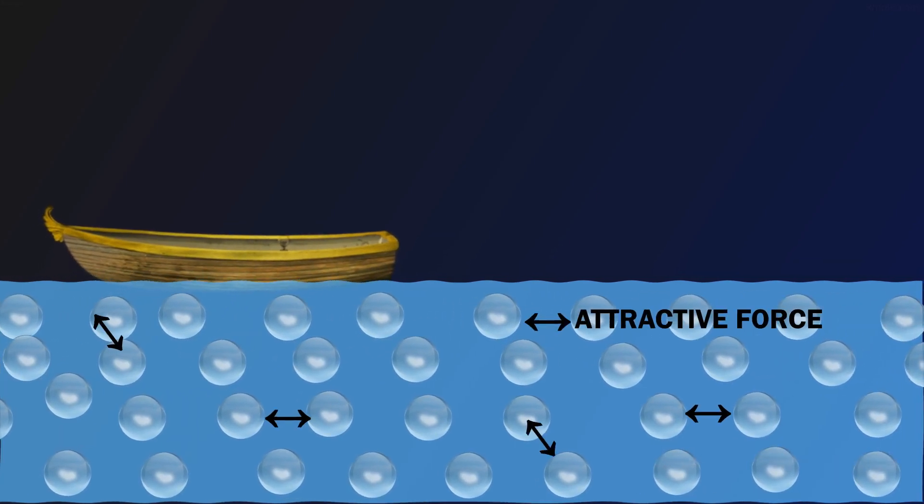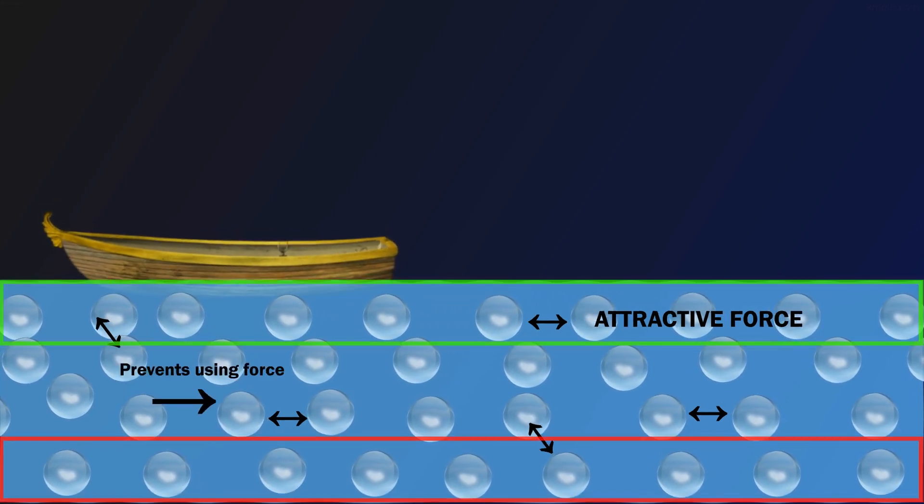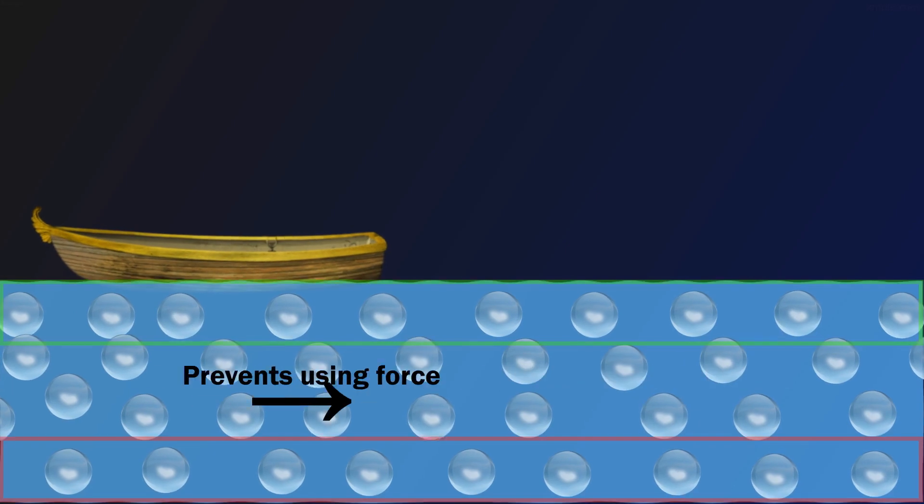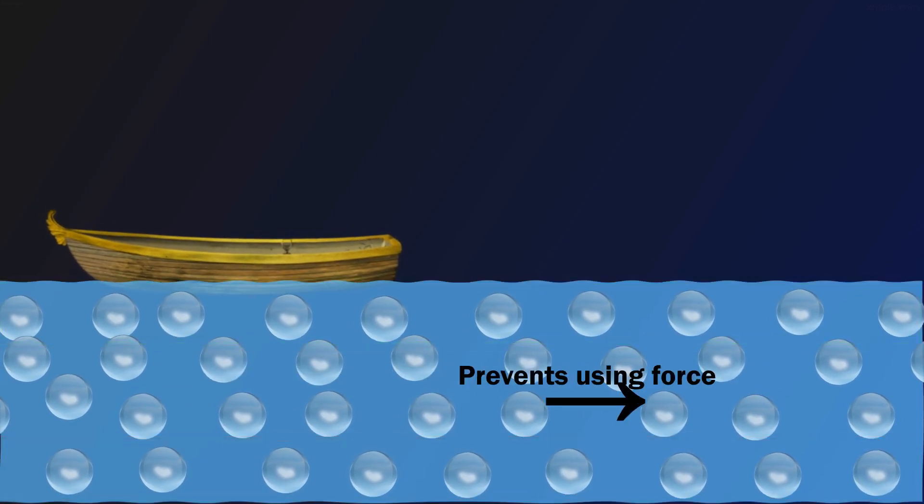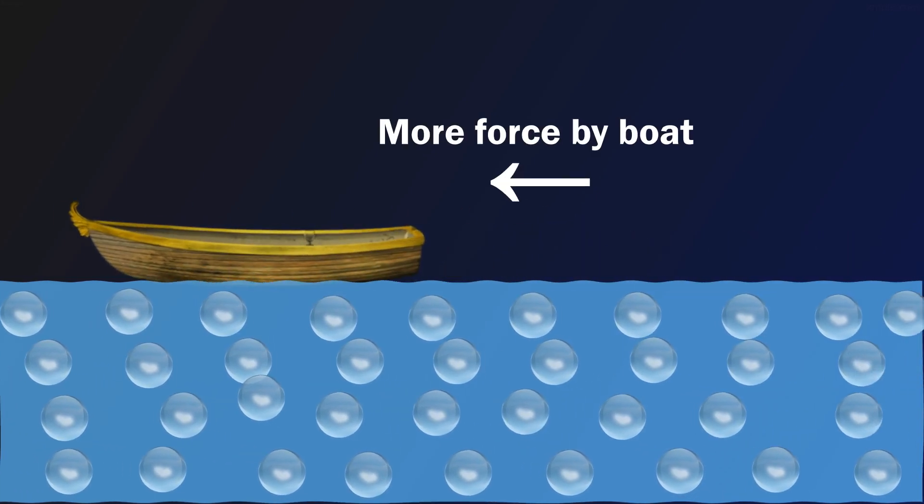Since there is an attractive force between molecules, deeper molecules try to prevent surface particles from moving with the boat. And to overcome this force, the boat needs to apply more force.